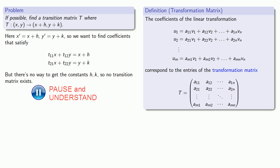But in these formulas, there's no way to get the constants h and k. And that means that no transition matrix exists. And that's somewhat upsetting, because translations are the simplest of the geometric transformations. So what can we do about it?